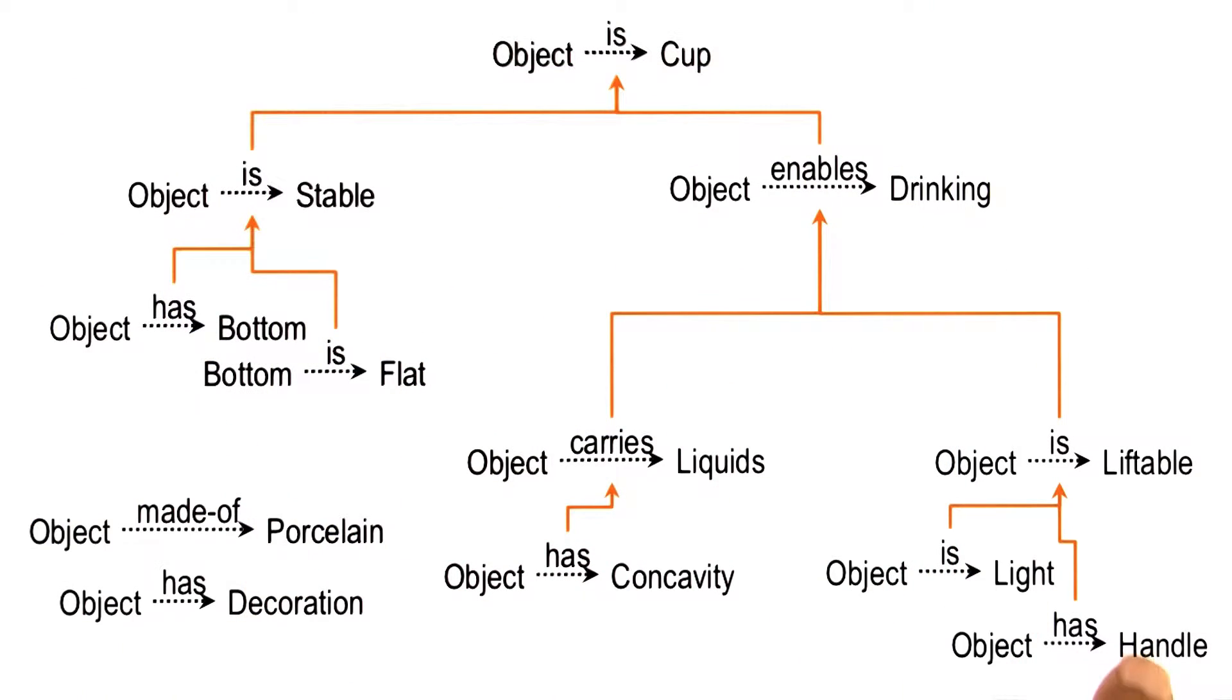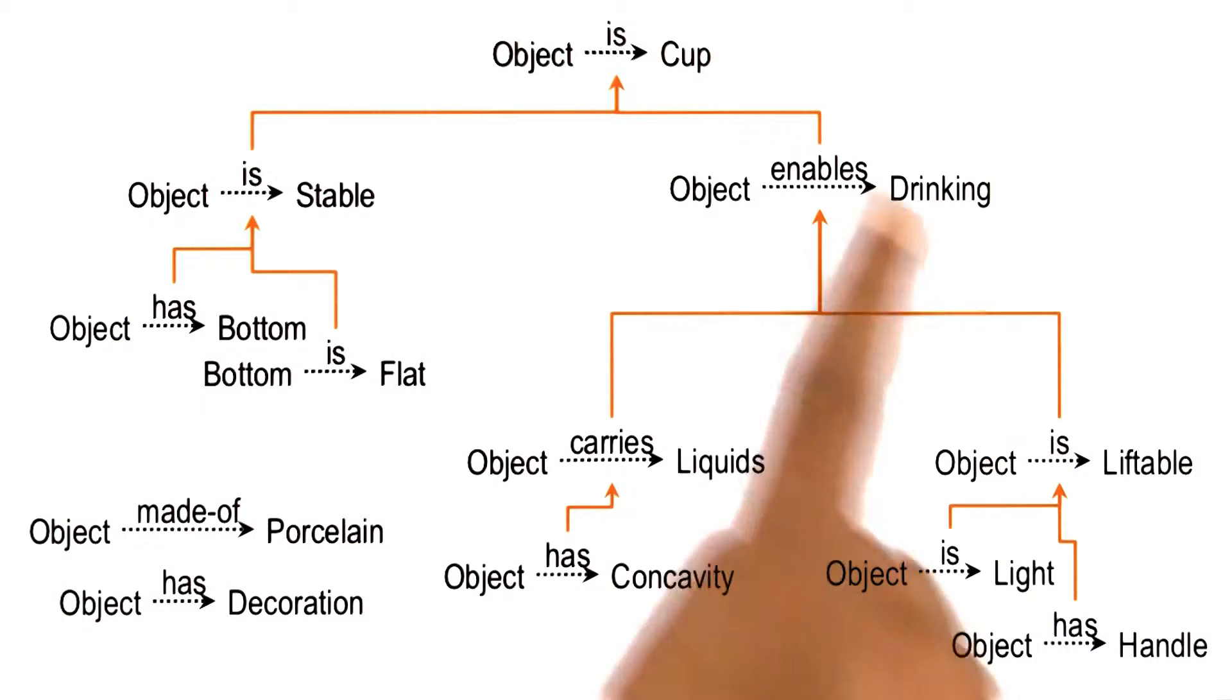To see why the lines between metacognition and deliberation are blurry, let us return to this example from explanation-based learning. When we talked about explanation-based learning, we did not talk about metacognition at all.